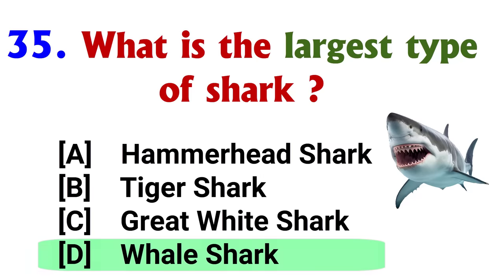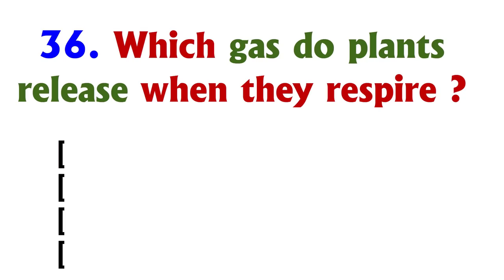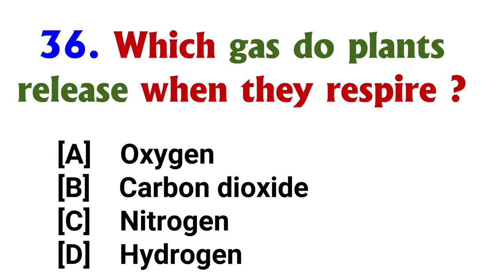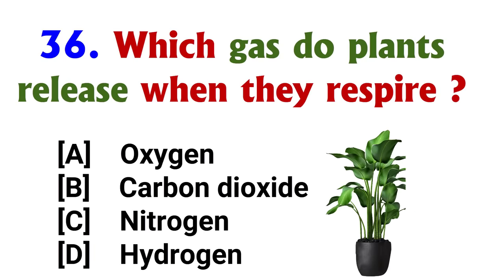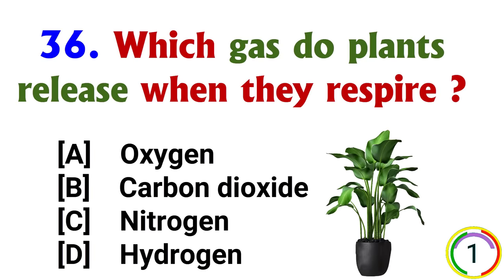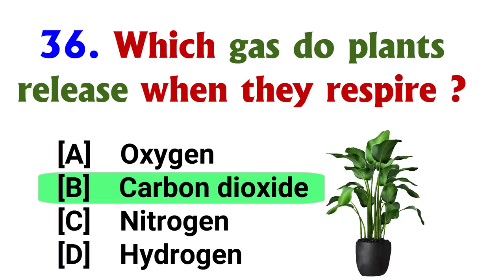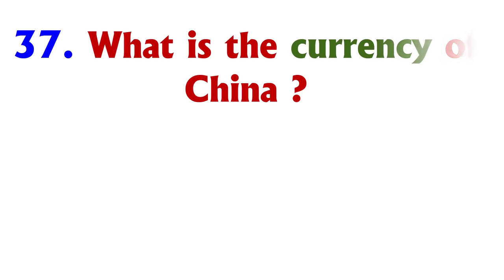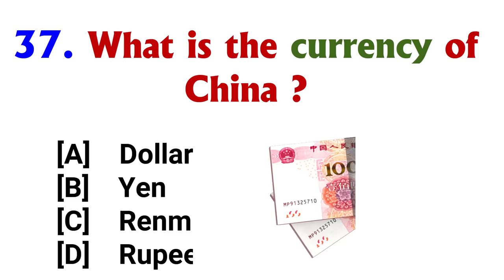What is the largest type of shark? Answer: option C, Whale shark. Which gas do plants release when they respire? Answer: option B, Carbon Dioxide.